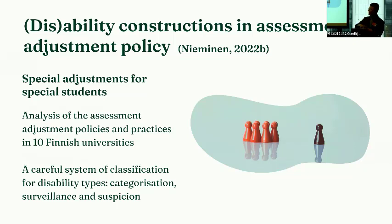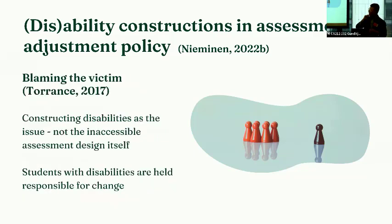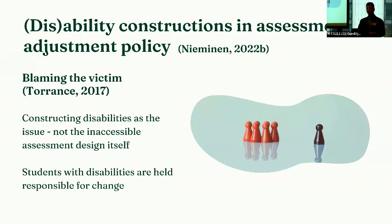I analyzed how the Finnish assessment adjustment system constitutes a very careful and precise system of classifying students into different categories, surveilling that students stick to their own category, and creating suspicion about whether a specific student actually belongs to that category. I claim, borrowing a notation by Harry Torrance, that the assessment adjustment system, in a way, claims the victim. Even though these practices are needed — I really want to highlight that — this is not a general criticism towards these practices, but a call for understanding their social effects. These practices construct students with disabilities as a certain category, and in doing so, construct disability as the issue to be noted and somehow overcome — meanwhile leaving inaccessible assessment systems and designs untouched.